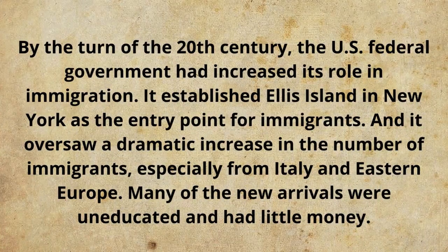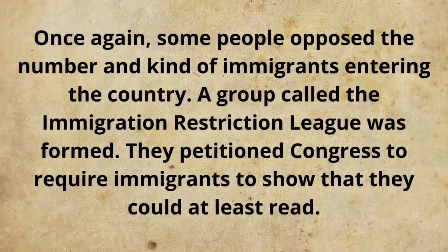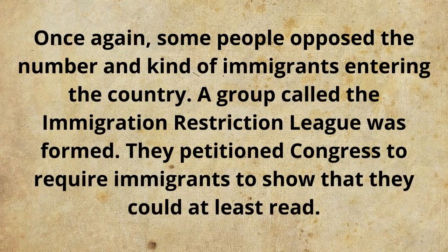By the turn of the 20th century, the US federal government had increased its role in immigration. It established Ellis Island in New York as the entry point for immigrants. And it oversaw a dramatic increase in the number of immigrants, especially from Italy and Eastern Europe. Many of the new arrivals were uneducated and had little money. Once again, some people opposed the number and kind of immigrants entering the country. A group called the Immigration Restriction League was formed.